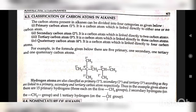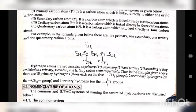Classification of carbon atoms in alkanes: Carbon atoms in alkanes are divided into four categories. A primary carbon atom is linked directly to one or no carbon atom. A secondary carbon atom is linked directly to two carbon atoms. A tertiary carbon atom is linked directly to three carbon atoms. A quaternary carbon atom is linked directly to four carbon atoms. Hydrogen atoms are also classified as primary, secondary, or tertiary according to whether they are linked to a primary, secondary, or tertiary carbon respectively.